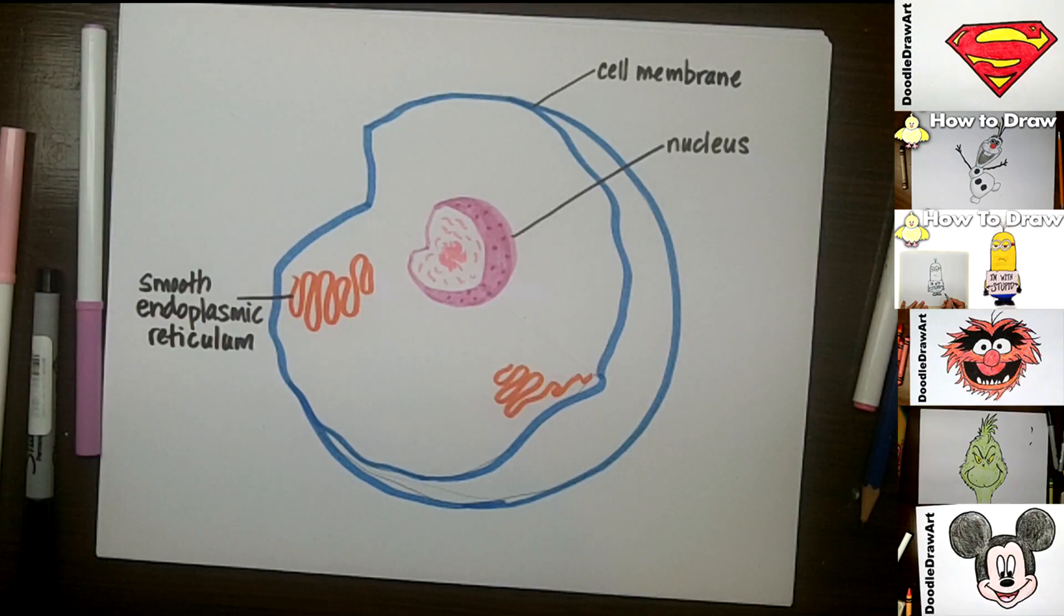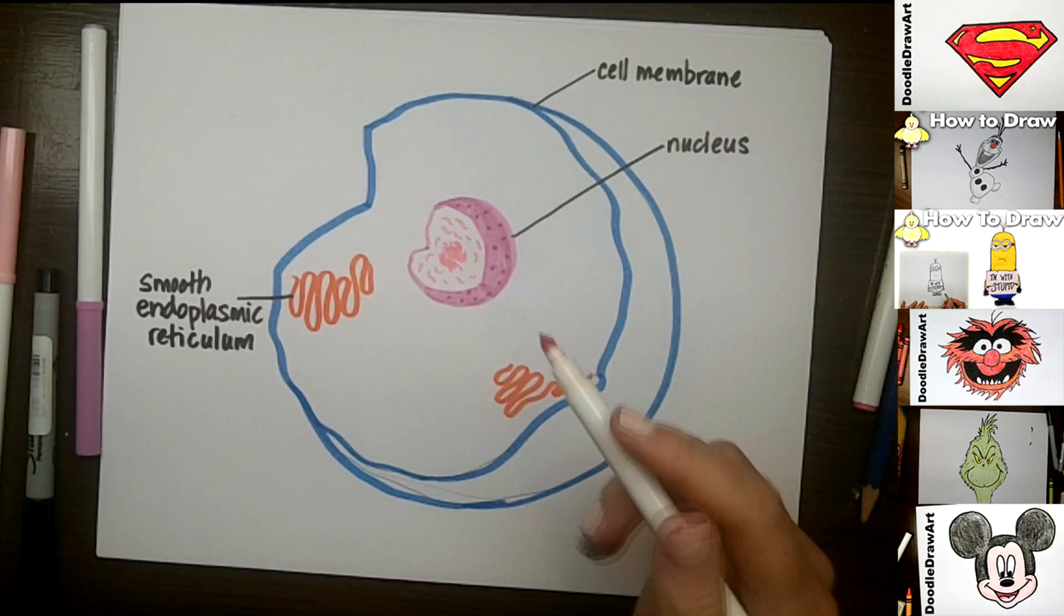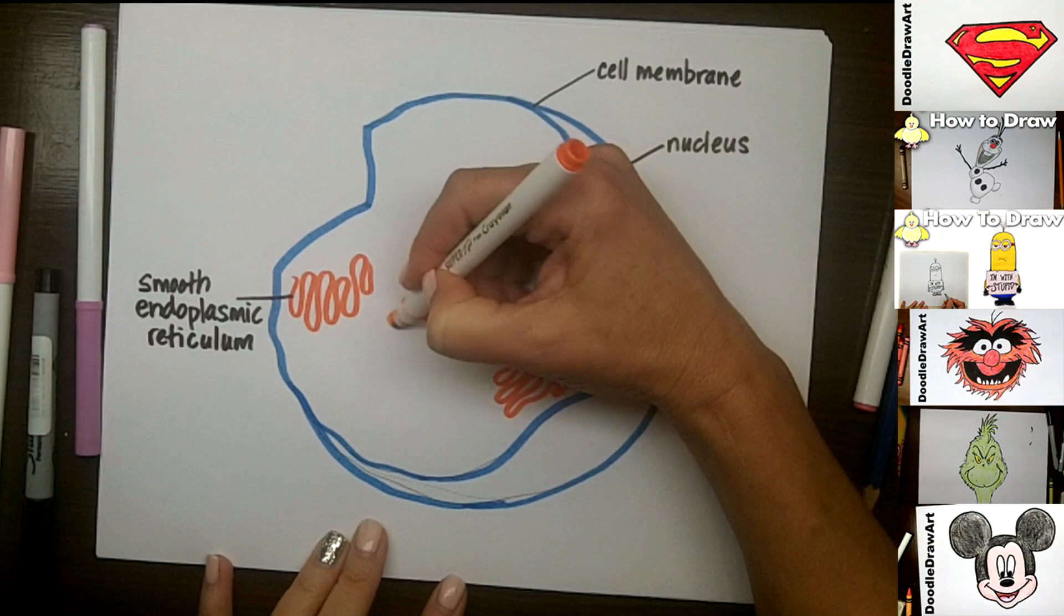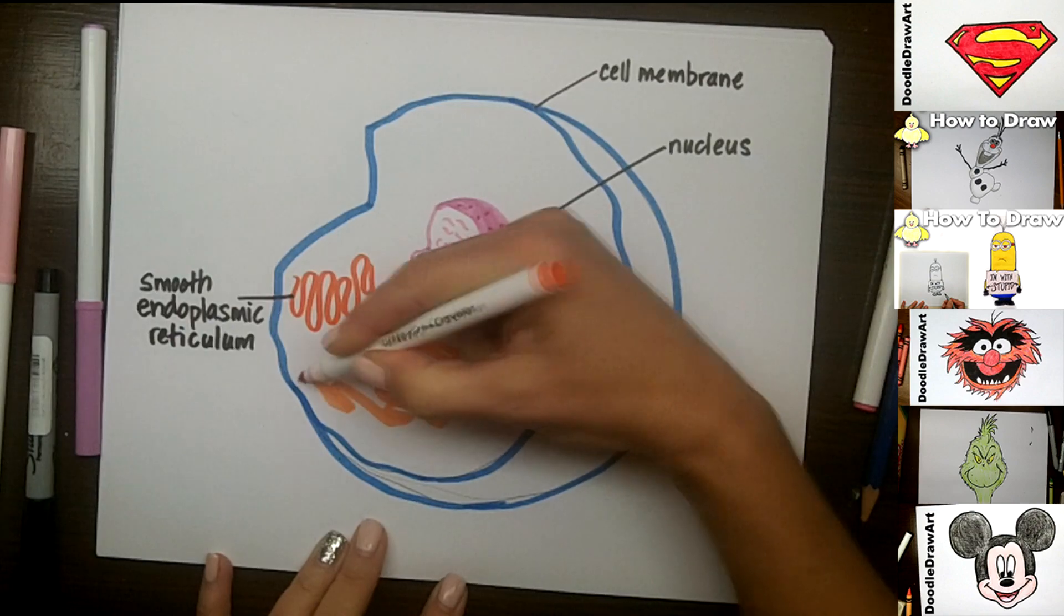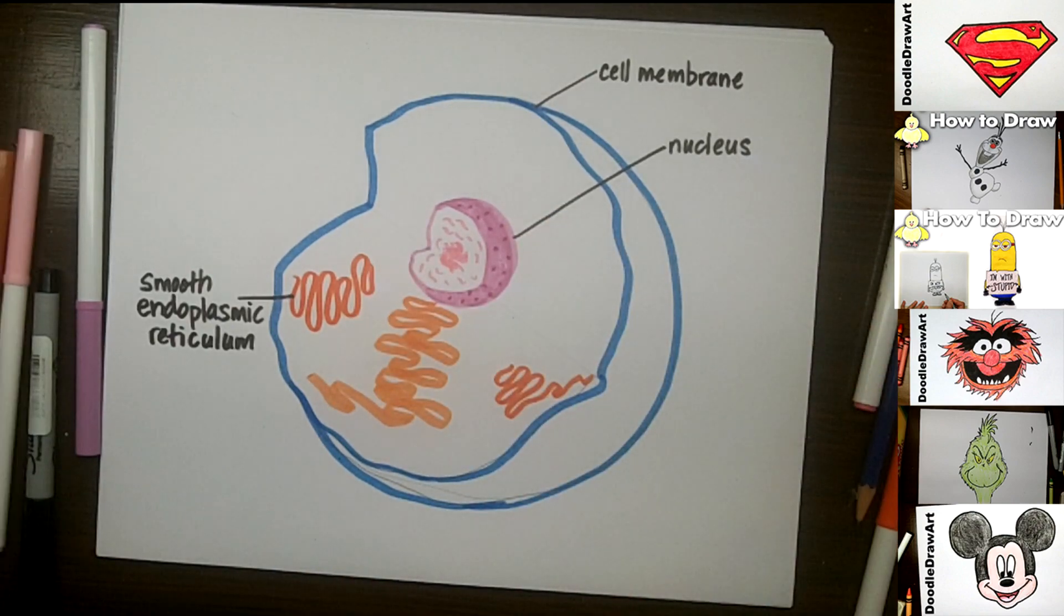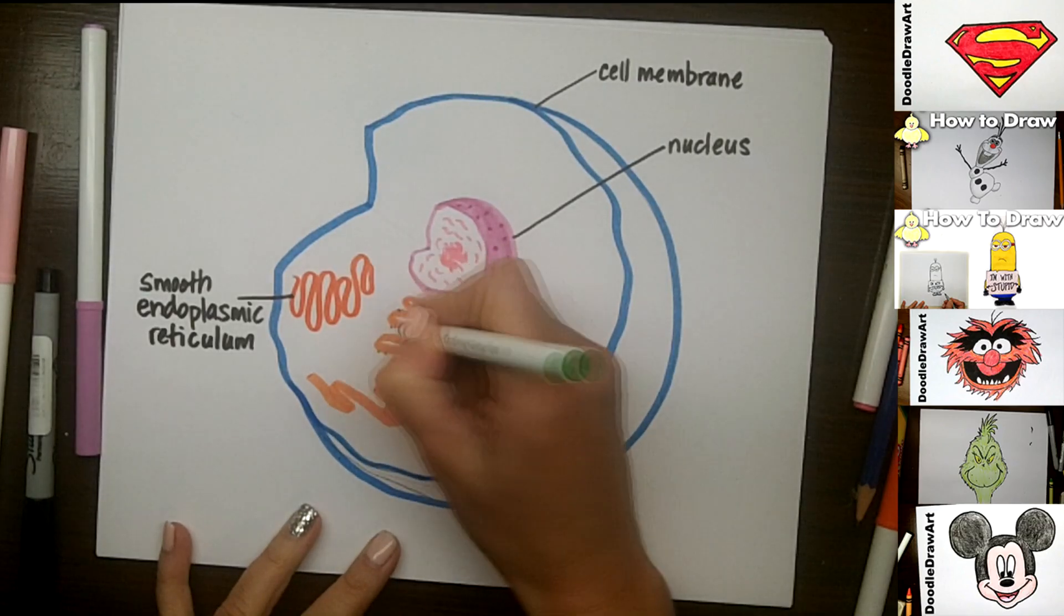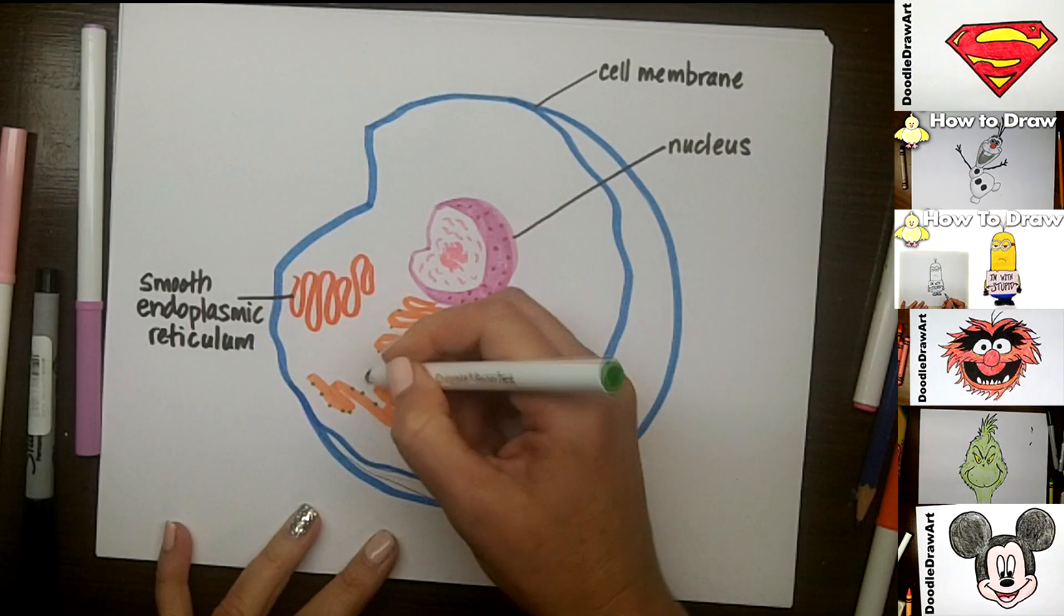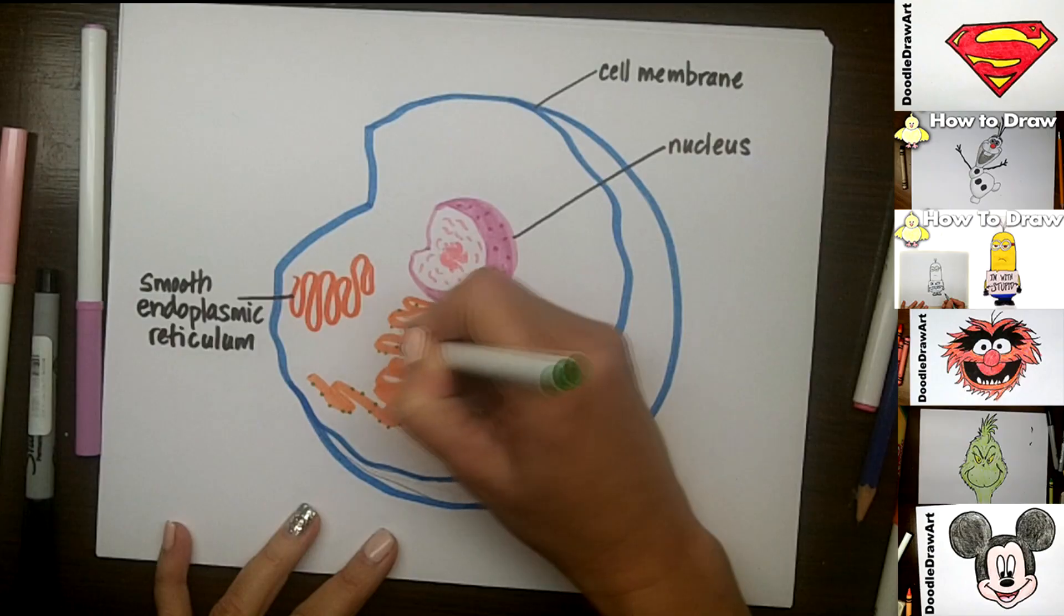Then there's another kind of endoplasmic reticulum called the rough endoplasmic reticulum. And that one has little ribosomes all over the outside. So we're going to draw that one here. Let's just draw this big, rough endoplasmic reticulum here. And we're going to make some ribosomes on it. So those are just hanging out on the surface of this rough endoplasmic reticulum. All right. And we'll put a label on this as well.